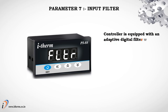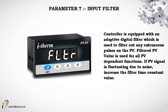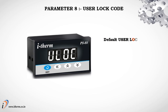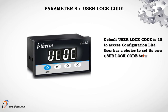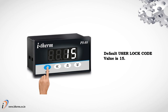Parameter 7: Input Filter. The controller is equipped with an adaptive digital filter, which is used to filter out any extraneous pulses on the process value. The filtered process value is used for all process value dependent functions. If the process value signal is fluctuating due to noise, increase the filter time constant value. The default input filter value is 4. Parameter 8: User Lock Code. The default user lock code is 15 to access the configuration list. The user has a choice to set their own lock code between 1 and 9999, to prevent unauthorized access of the configuration list.